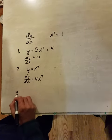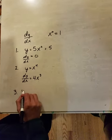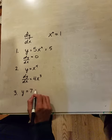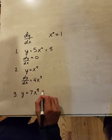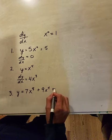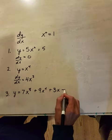Next up, number three. We've got lots of great stuff here. We've got y is equal to 7x to the 8th, plus 9x to the 4th, plus 3x, minus 15.